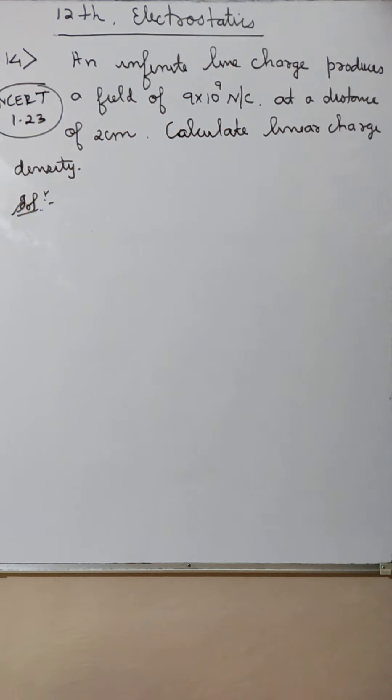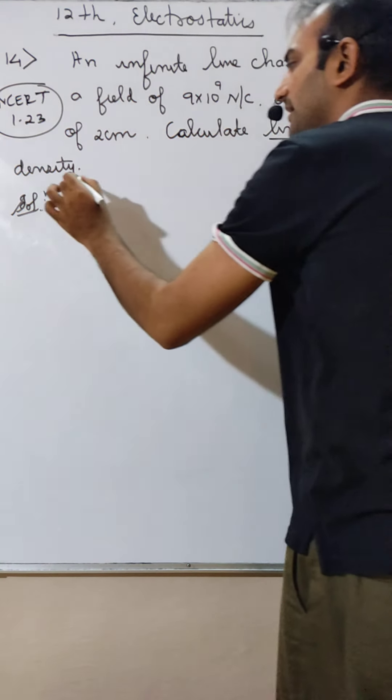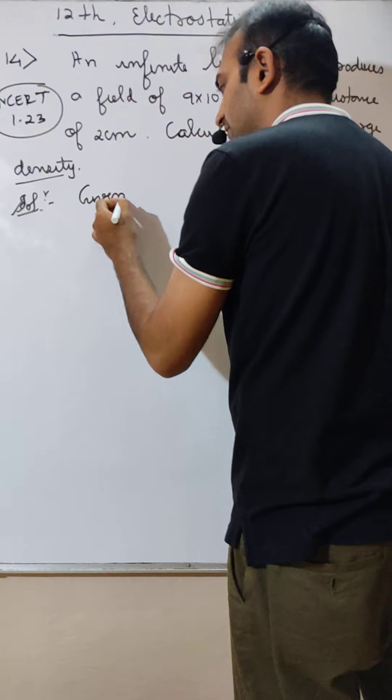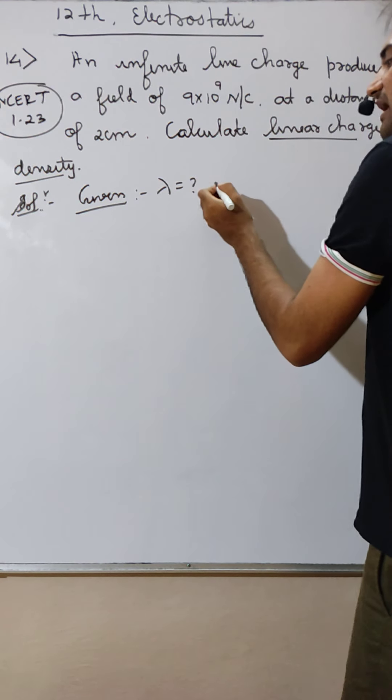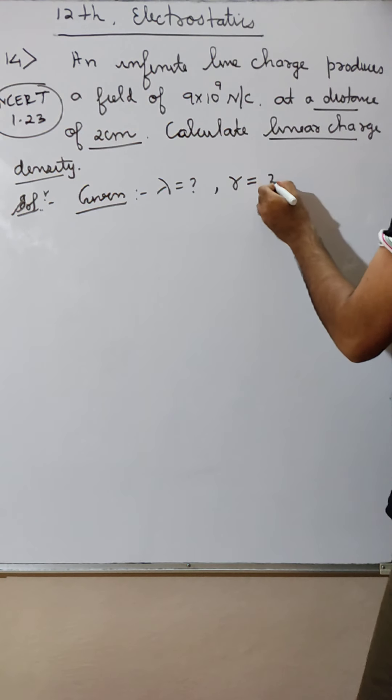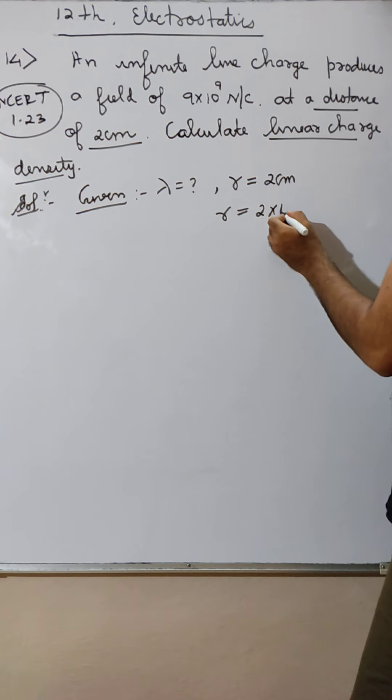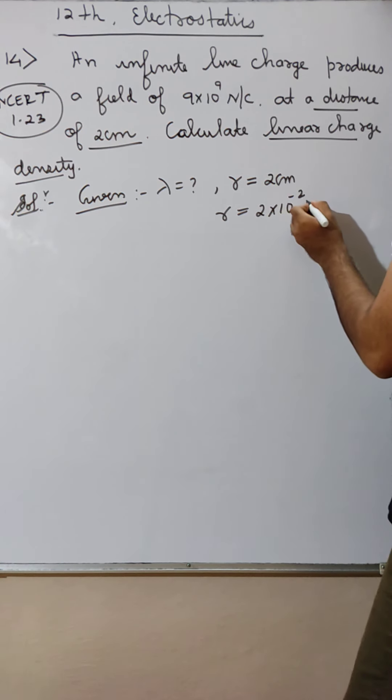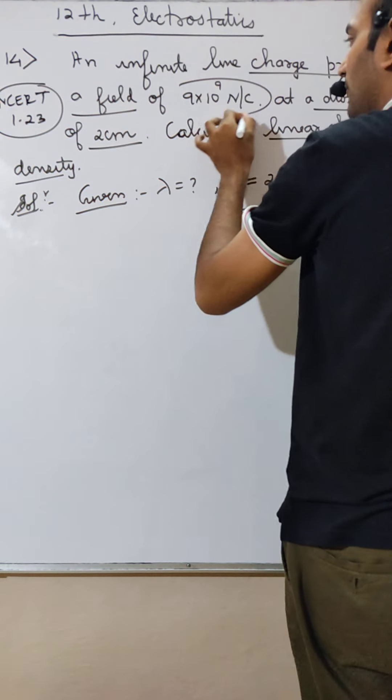Solution. In an infinitely line charge, line charge density. And they have given the line charge produces a field of this much. What is this?